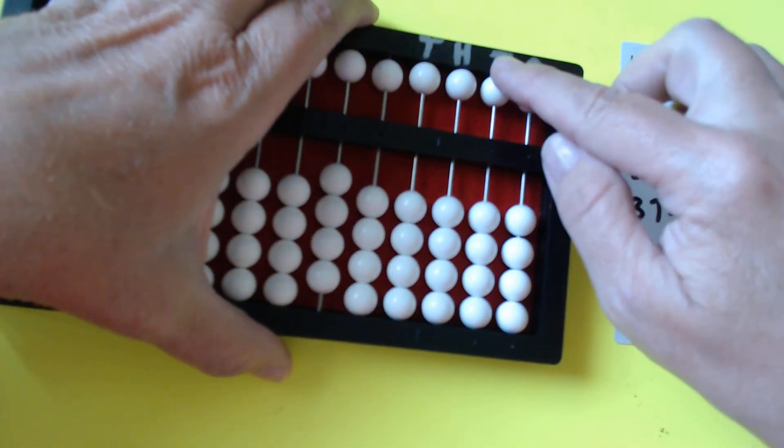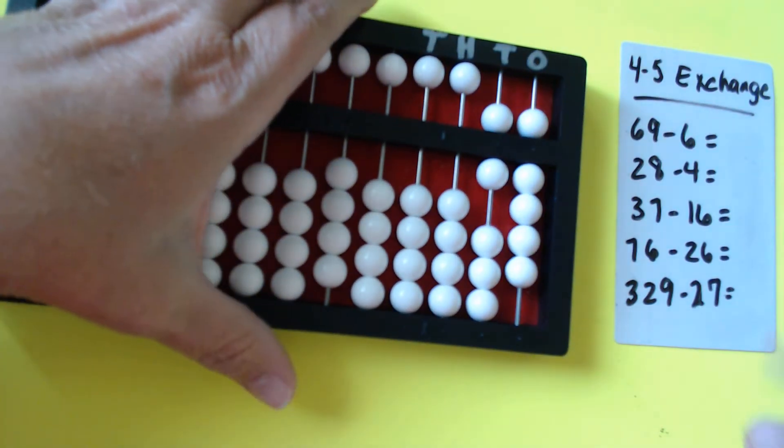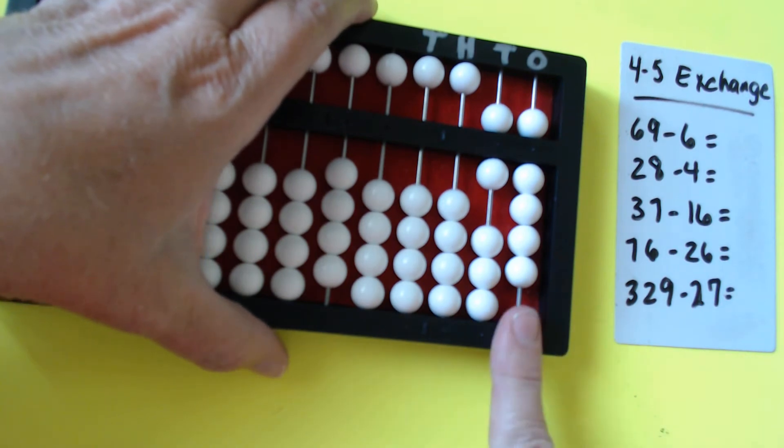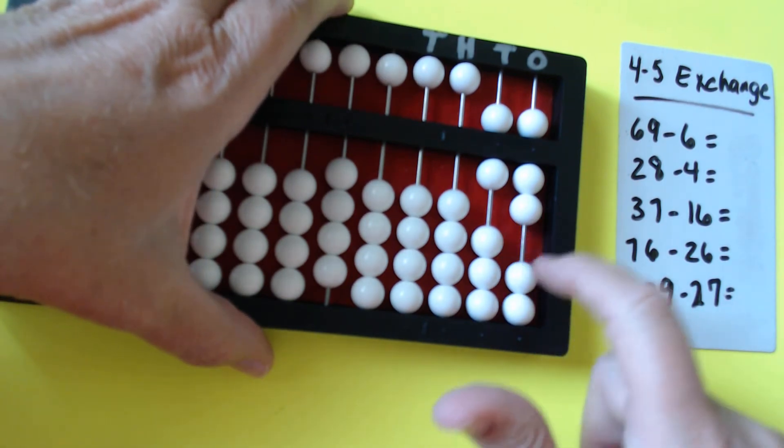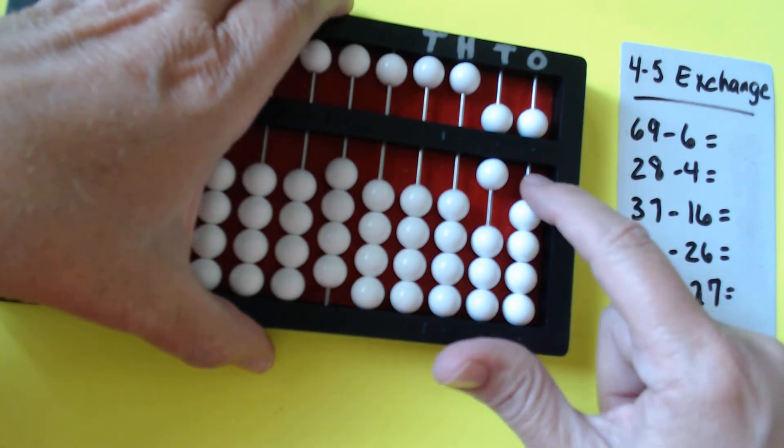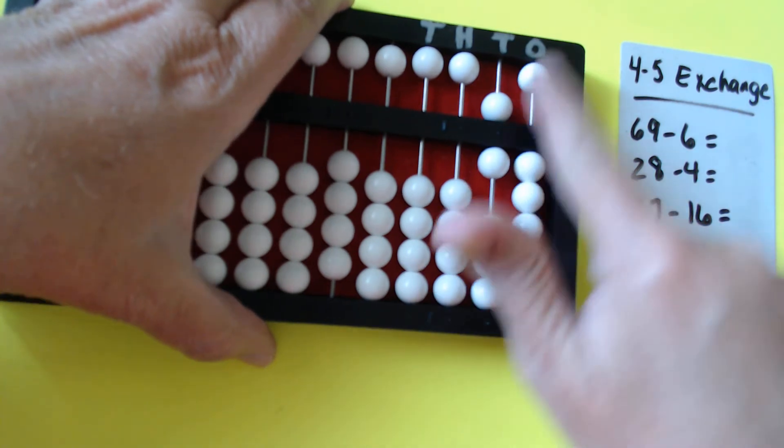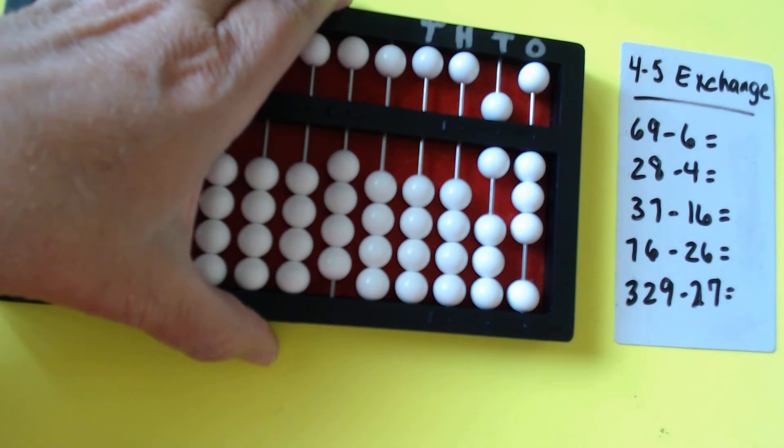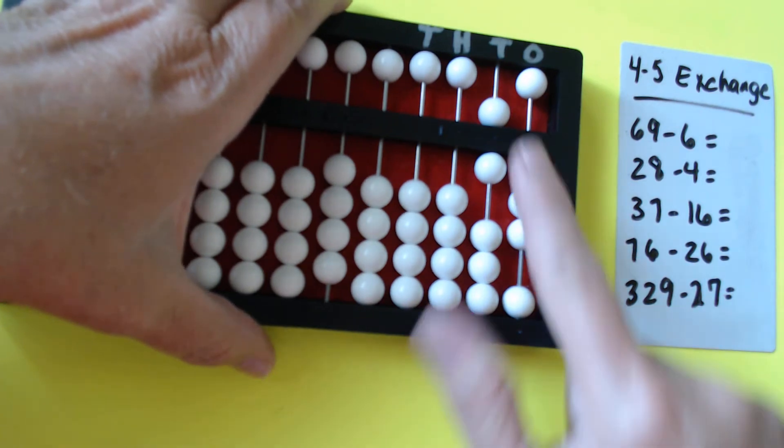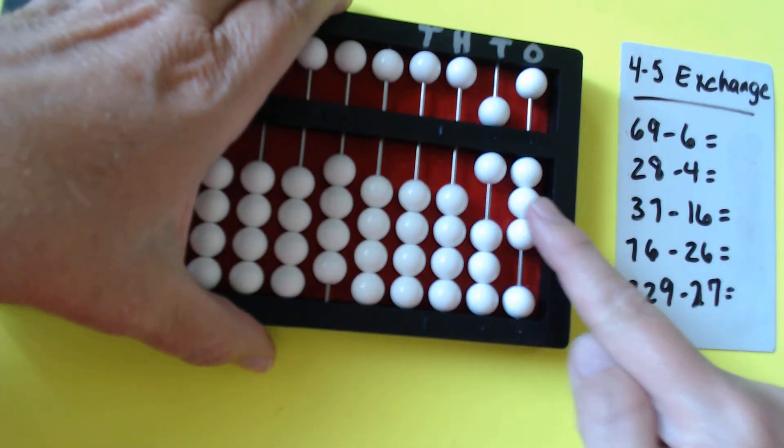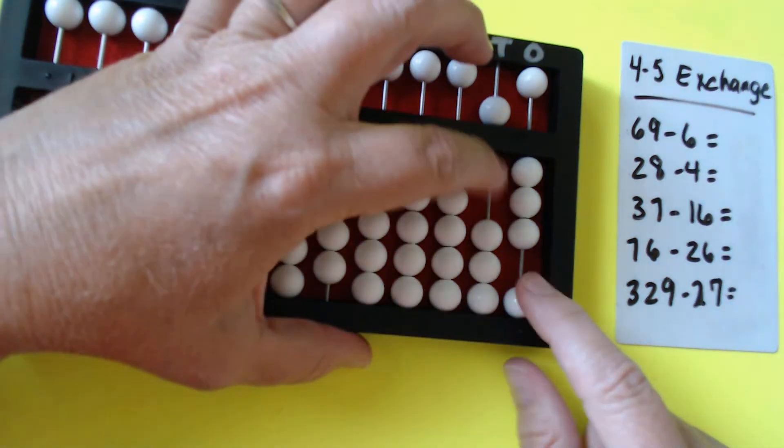So let's set 69. We are going to subtract six, so we're going to go on the ones column: 1, 2, 3, 4, we're out, no beads. So we're going to make this exchange. 5, 6, and that gives us an answer of 50, 60, 1, 2, 3. Alright, I'm going to do that one again.